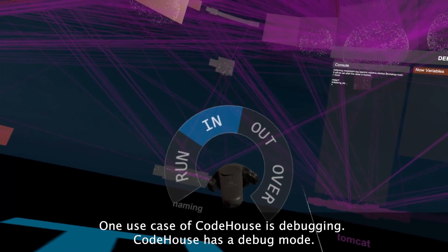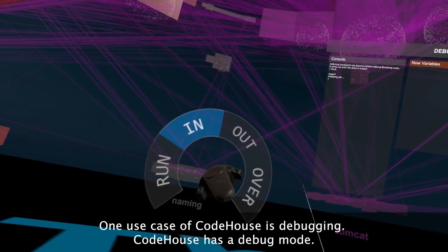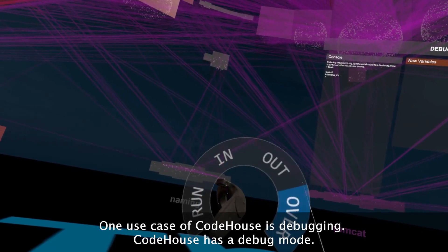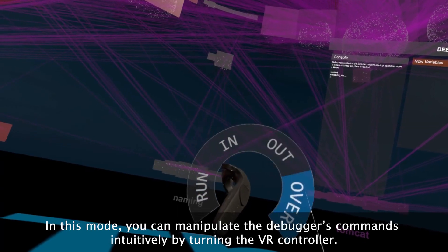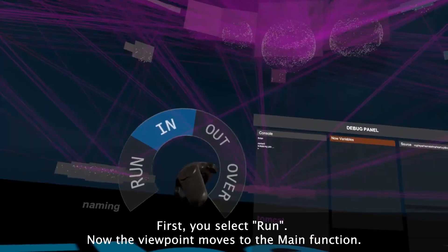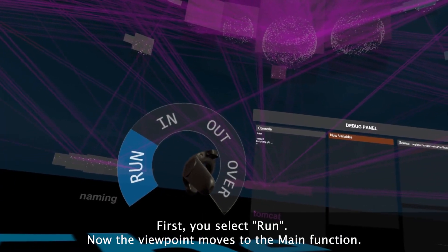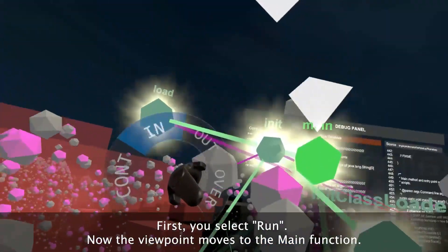One use case of CodeHouse is debugging. CodeHouse has a debug mode. In this mode, you can manipulate the debugger's commands intuitively by turning the VR controller. First, you select run. Now the viewpoint moves to the main function.